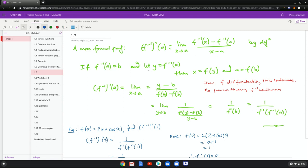Let f inverse a be b and f inverse x be y. Then you have x is f of y and a is f of b, so that this derivative is now limit x going to a of y minus b over f of y minus f of b.